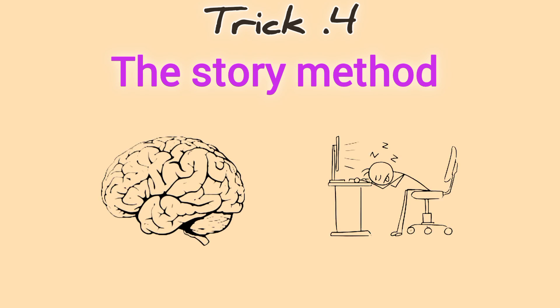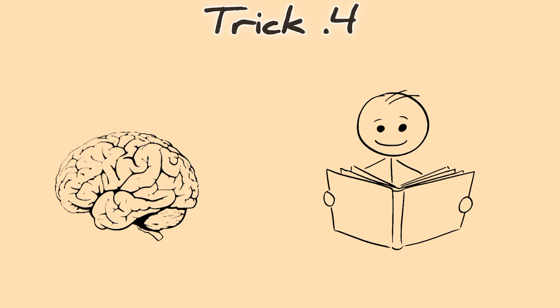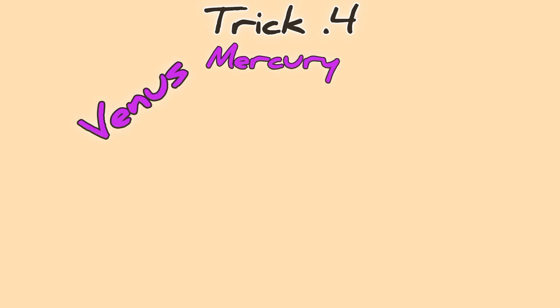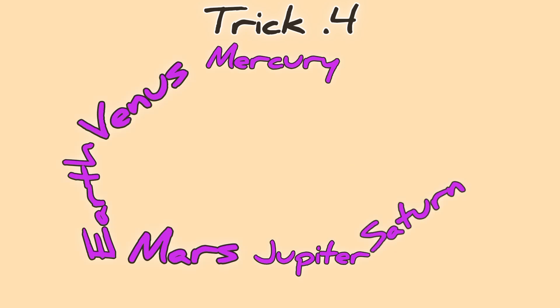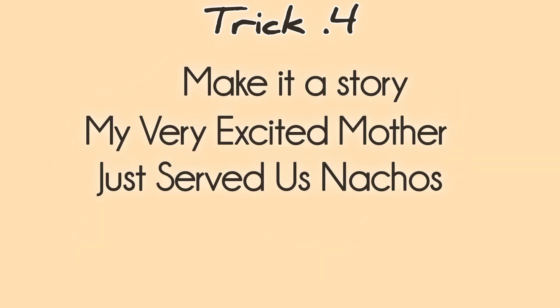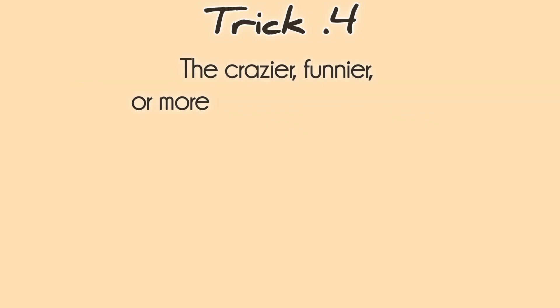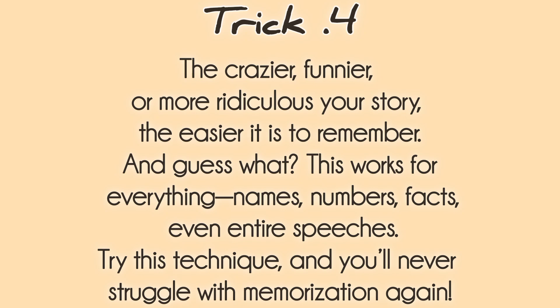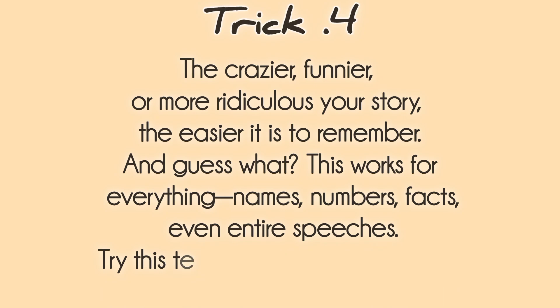Memory Trick 4: The Story Method. Your brain doesn't remember boring information, it remembers stories. Let's say you need to memorize the planets in order. Instead of repeating Mercury, Venus, Earth, Mars, Jupiter, Saturn, Uranus, Neptune, make it a story: My very excited mother just served us nachos. Each first letter represents a planet: Mercury, Venus, Earth, and so on. The crazier, funnier, or more ridiculous your story, the easier it is to remember. And guess what? This works for everything: names, numbers, facts, even entire speeches. Try this technique, and you'll never struggle with memorization again.